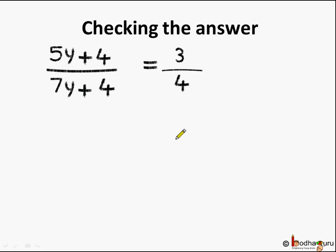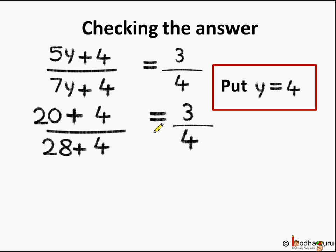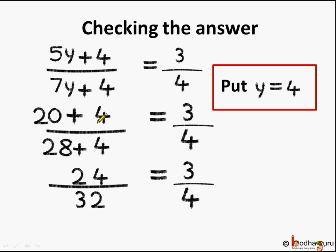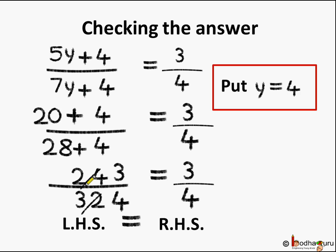Now let's check the answer. We put the value y equal to 4 in the equation. So the numerator becomes 5 multiplied by 4 plus 4, which is 20 plus 4 equals 24. The denominator becomes 7 multiplied by 4 plus 4, which is 28 plus 4 equals 32. The RHS remains 3 by 4. Simplifying 24 by 32: since 8 threes are 24 and 8 fours are 32, it reduces to 3 by 4. LHS equals RHS, which means our solution is correct — y is equal to 4.